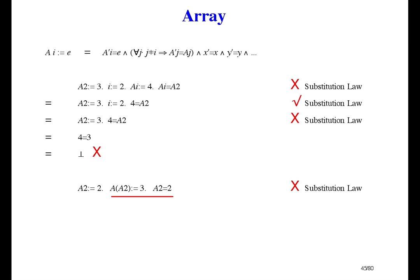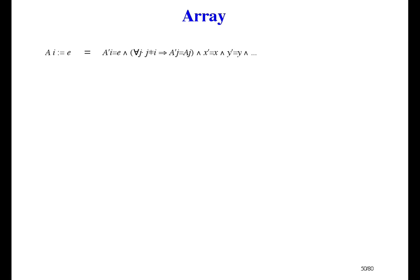If we use the substitution law, there is no a of a of 2 to replace. So it stays a2 equals 2. And now there is an a2 to replace. So it becomes 2 equals 2, which is true. And that's the wrong answer. So you can't use the substitution law on array element assignment.